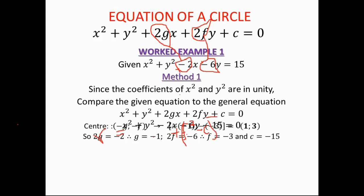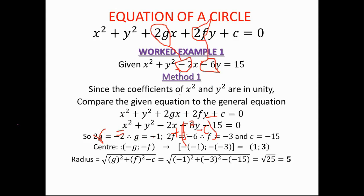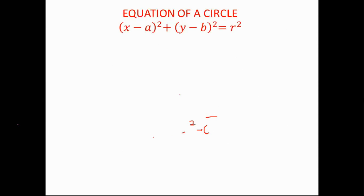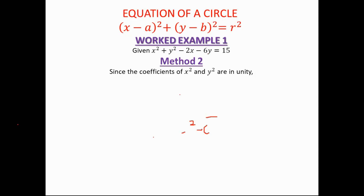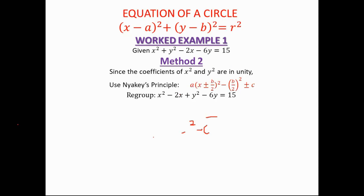Let's move on to the next method — we've just shown you how it is done using the general equation. Now I want us to use the completing the square method on the same equation to determine the center and radius. The first method was comparing the two equations; this time we use completing the square.